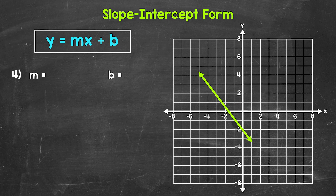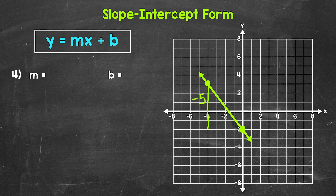Let's move on to number 4. Taking a look at number 4, we have a line with a negative slope, and the y-intercept is right here at negative 2. Now we need to look for another point on our line so we can find the slope. Working from the left point to the right, starting with the rise, we need to go down 5 units — and since we went down, our rise is negative 5. As far as our run, we need to go to the right 4 units, so our run is positive 4. Our slope is negative 5 over 4, so negative 5 fourths. Our y-intercept is negative 2.